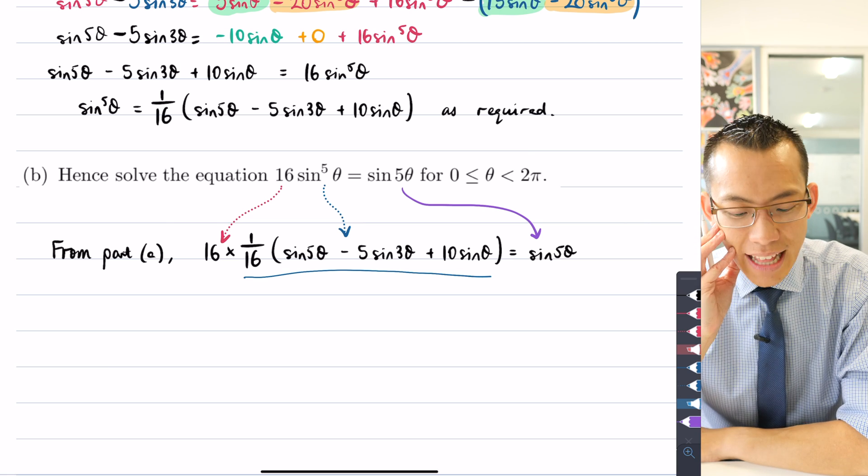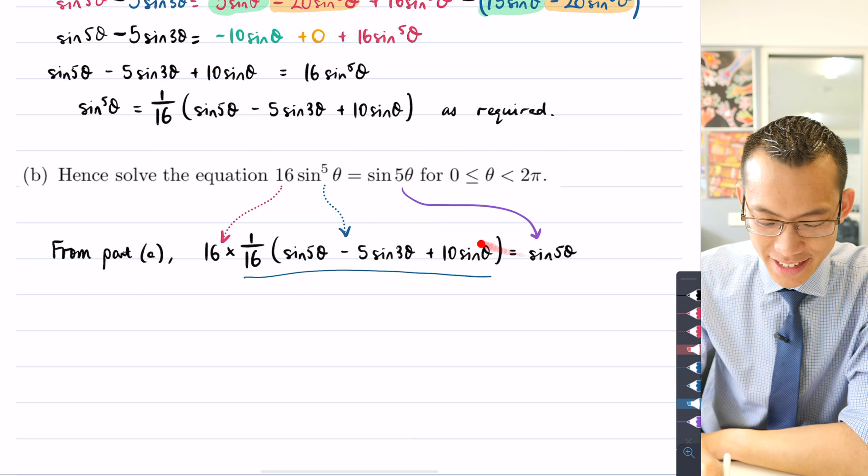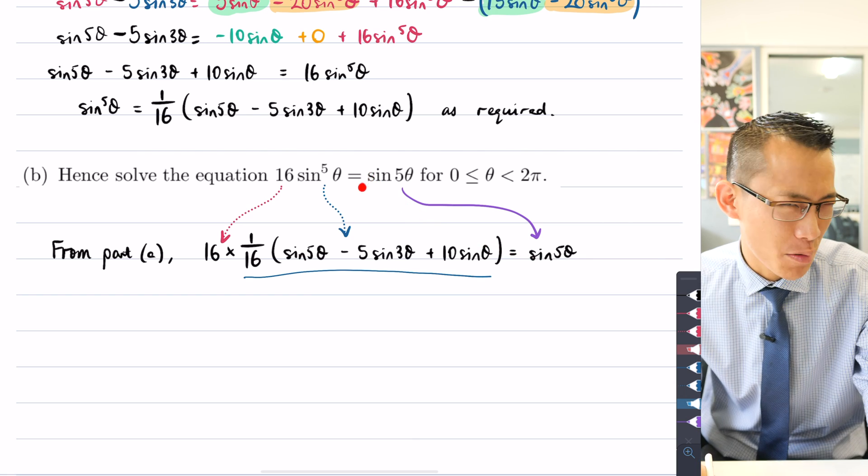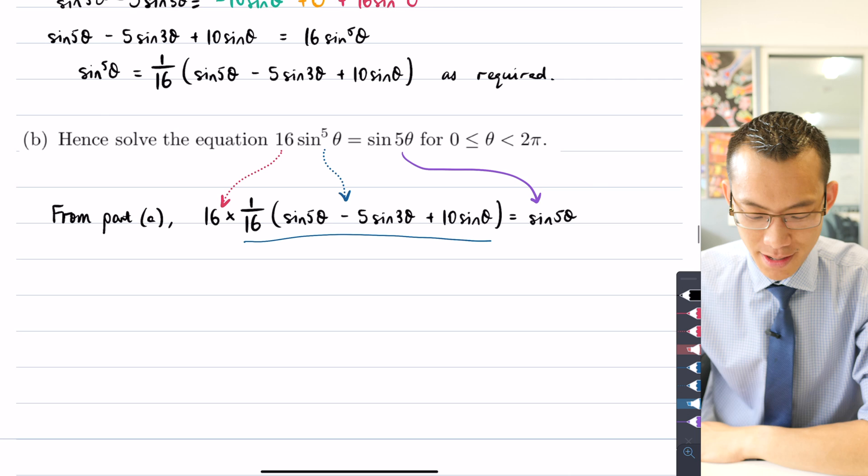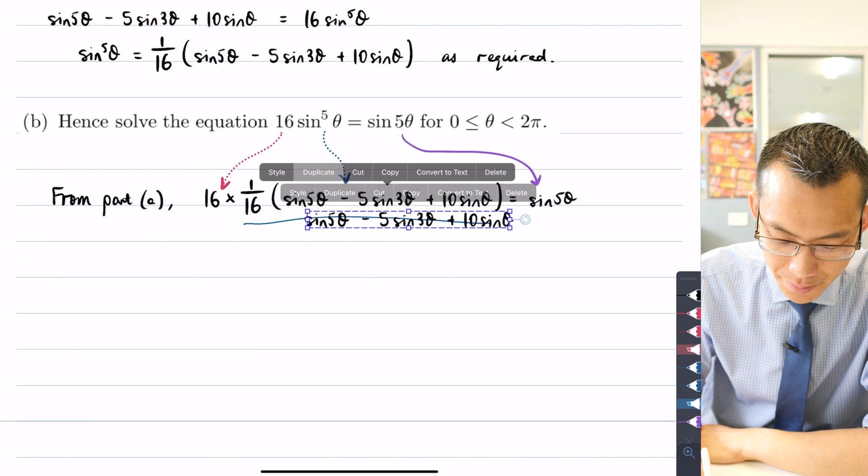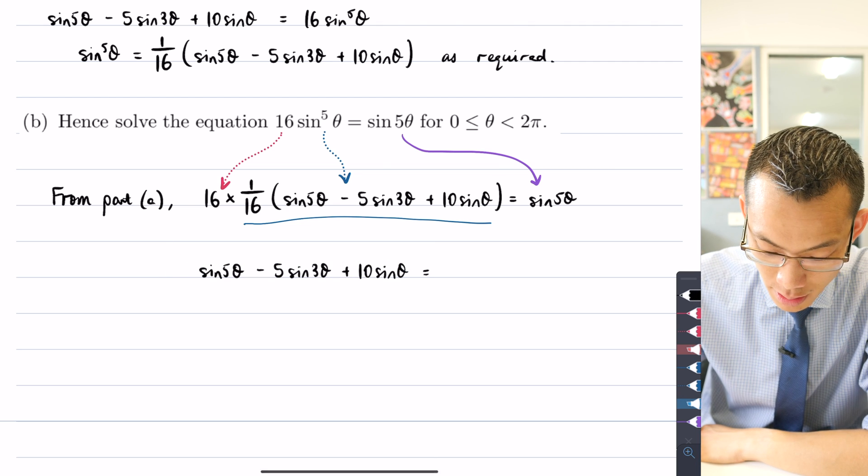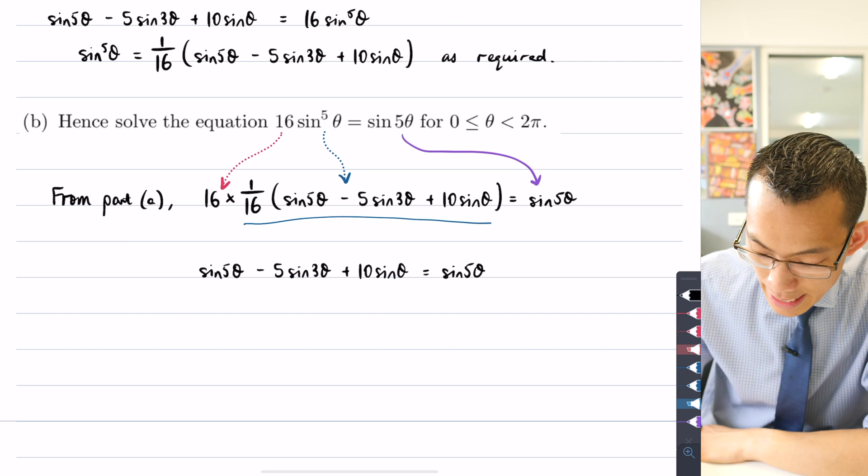And I'm solving for 0 to 2π. Now you might say that looks a lot worse. This clearly looks more complicated than this, but you can see some stuff is going to cancel, isn't it? For starters, those 16s are going to cancel.